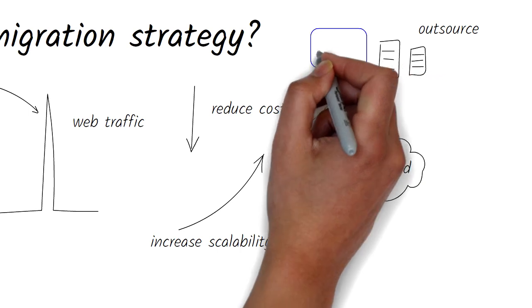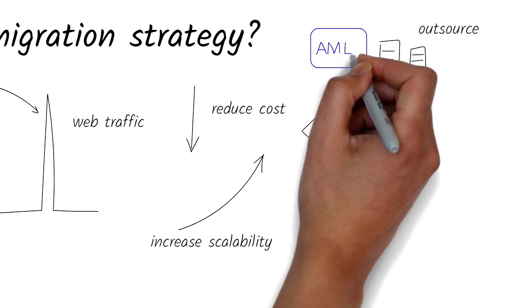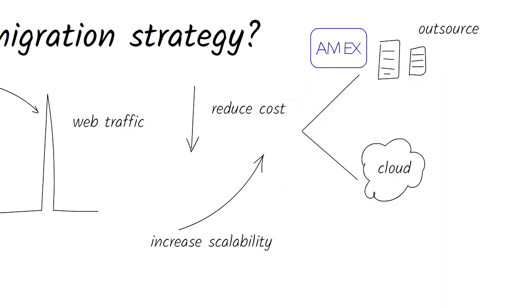If your software application were just some commodity, then you could go with option one because it's not a differentiator. In the early 2000s, Amex outsourced its IT to IBM in a deal worth about four billion dollars at the time.